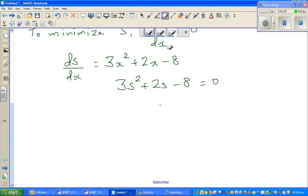If you factorize this, you can use a graphic calculator, but I want to do it without the calculator. So 3 times negative 8 is negative 24, and the two factors of negative 24 which give me plus 2 are plus 6 and minus 4.